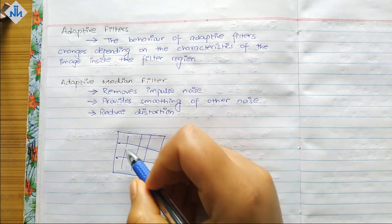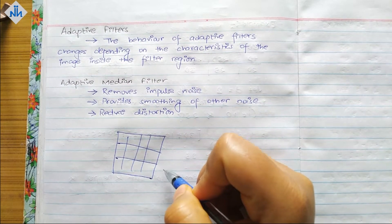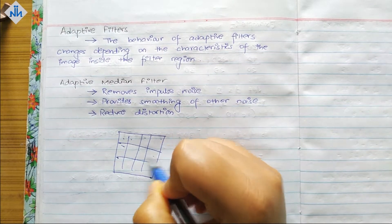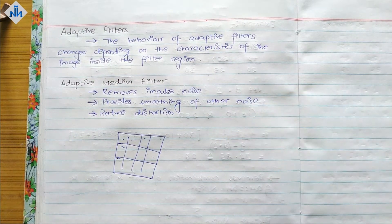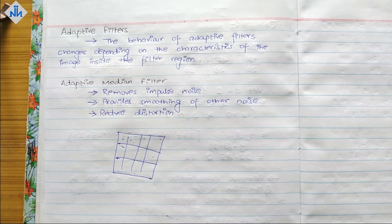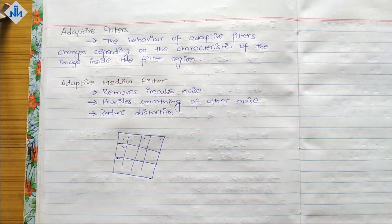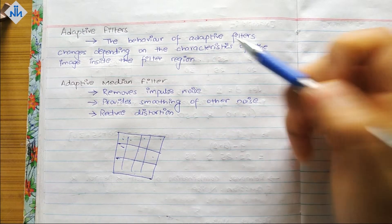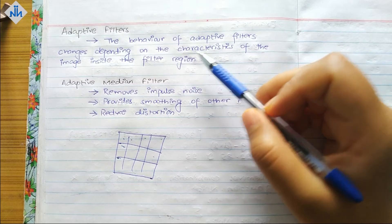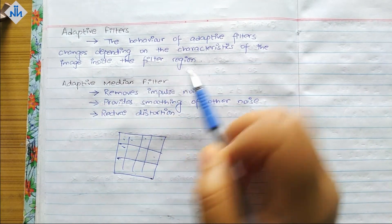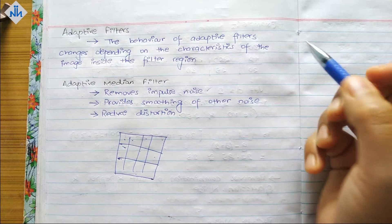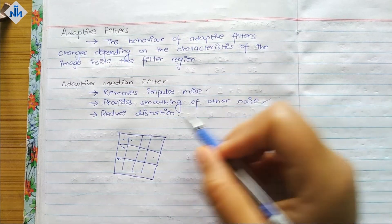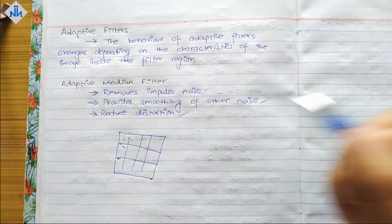It only filters the regions that are required. When adaptive filters travel in the entire image, it will first see what type of filtering that part needs and it changes its behavior accordingly. One of the ways of doing adaptive filter is adaptive mean filter, which removes impulse noise, provides smoothing of other noise, and reduces distortion.